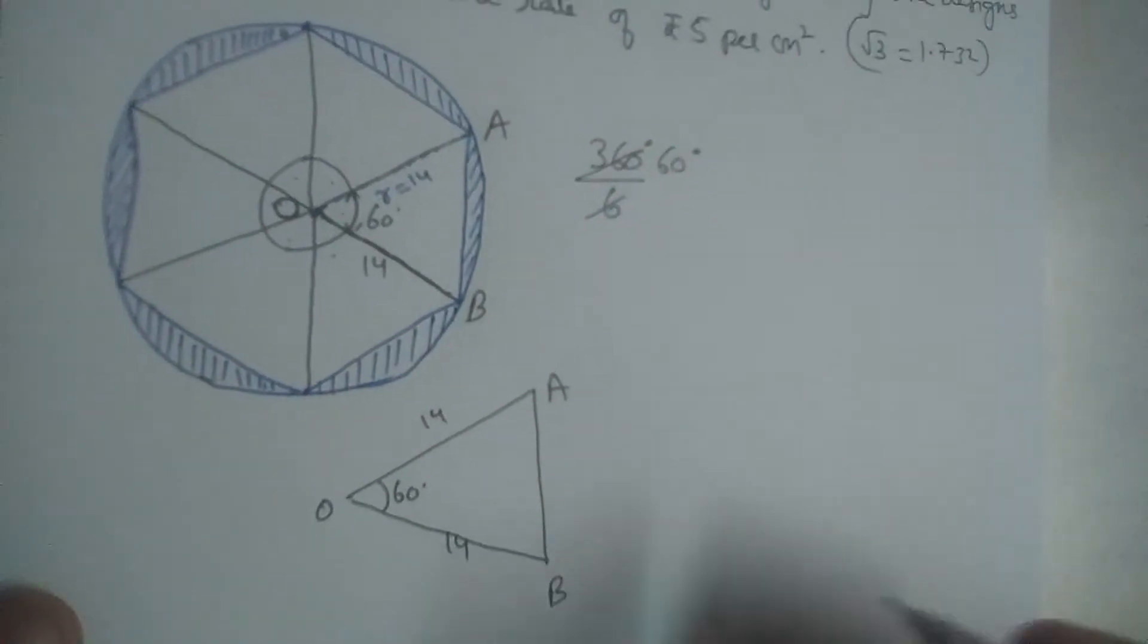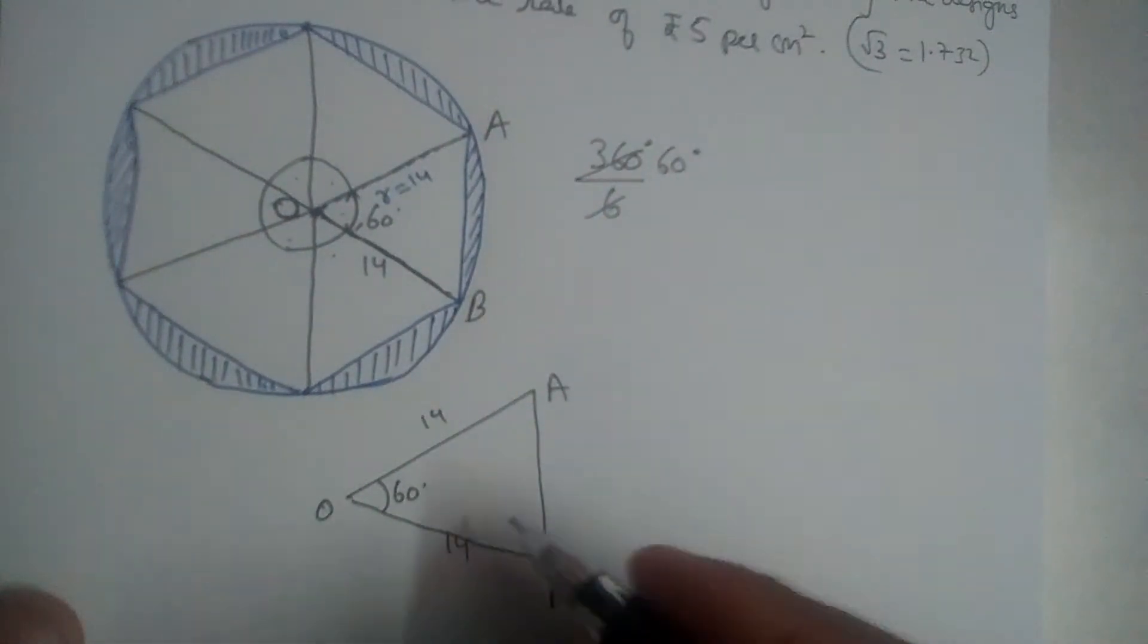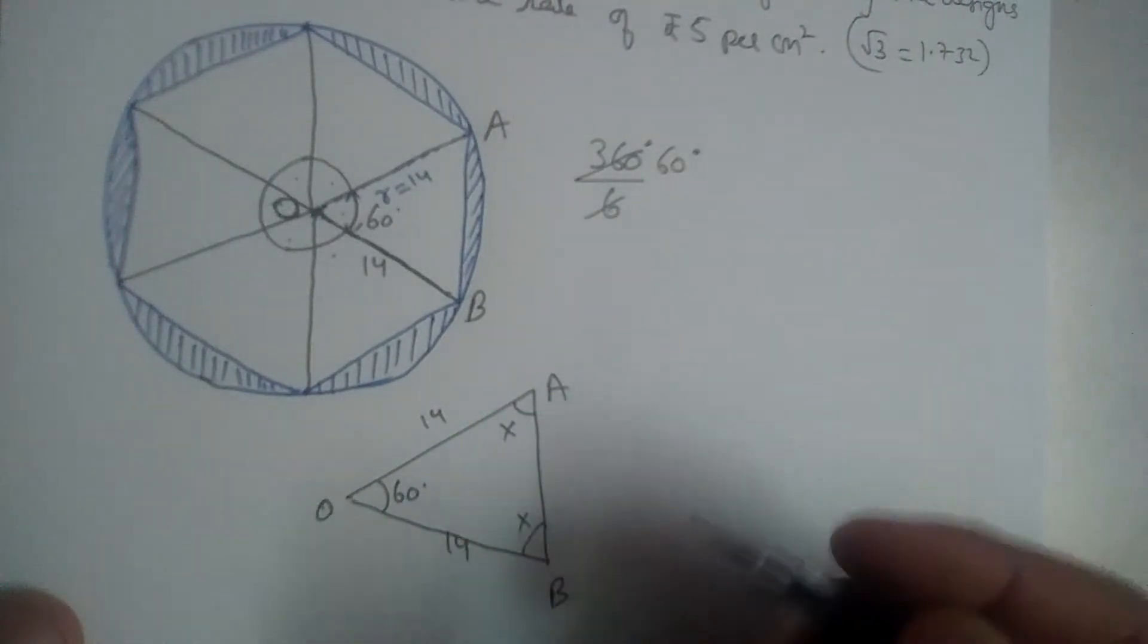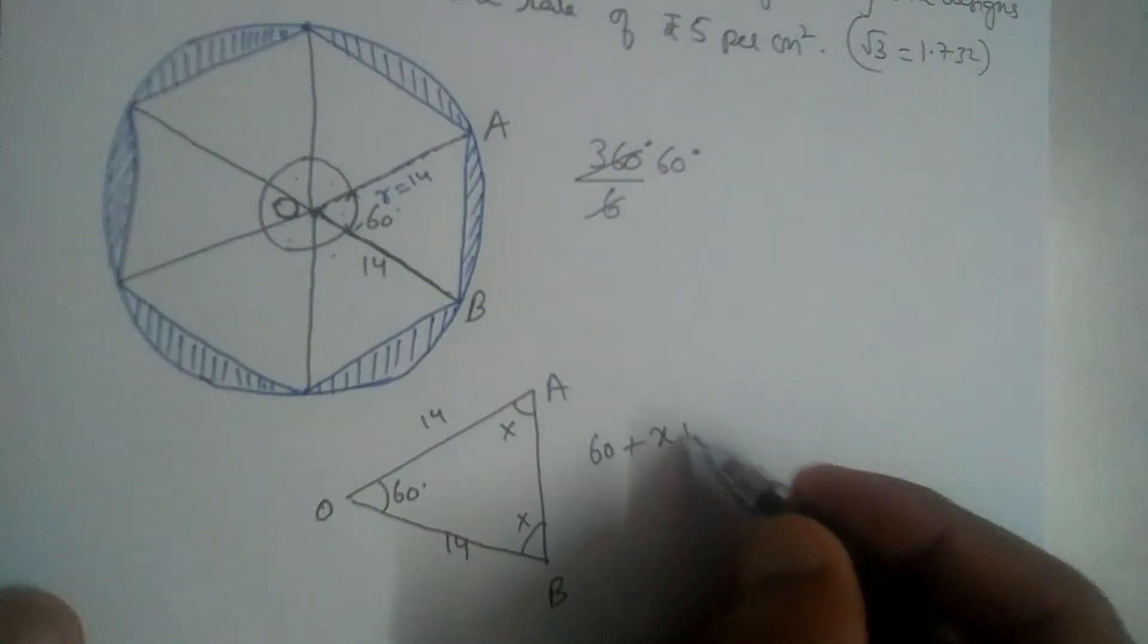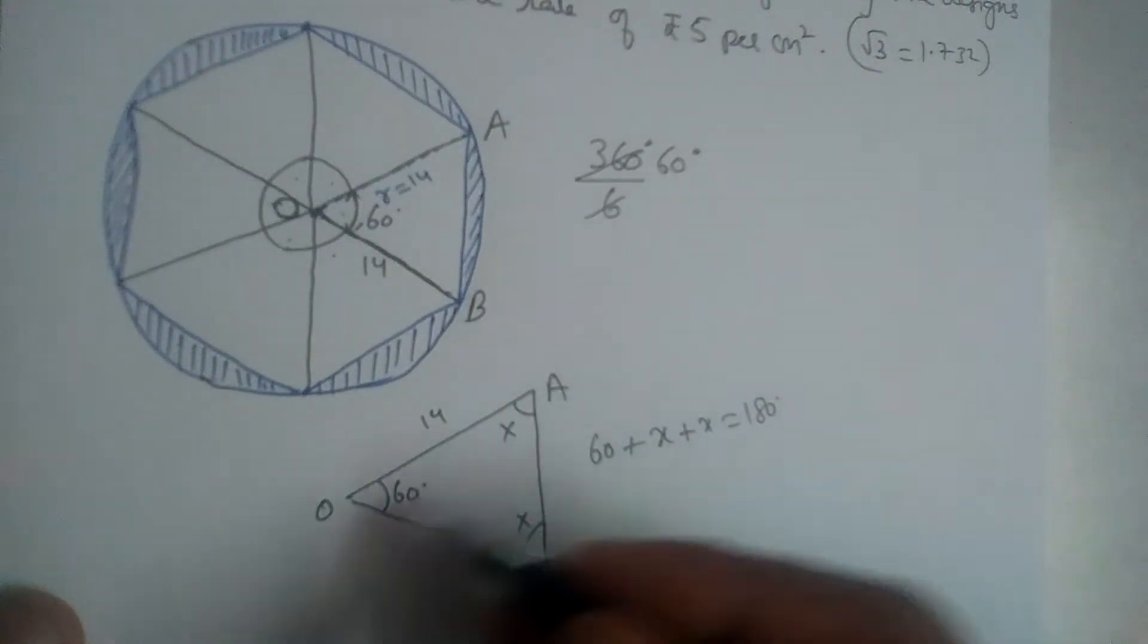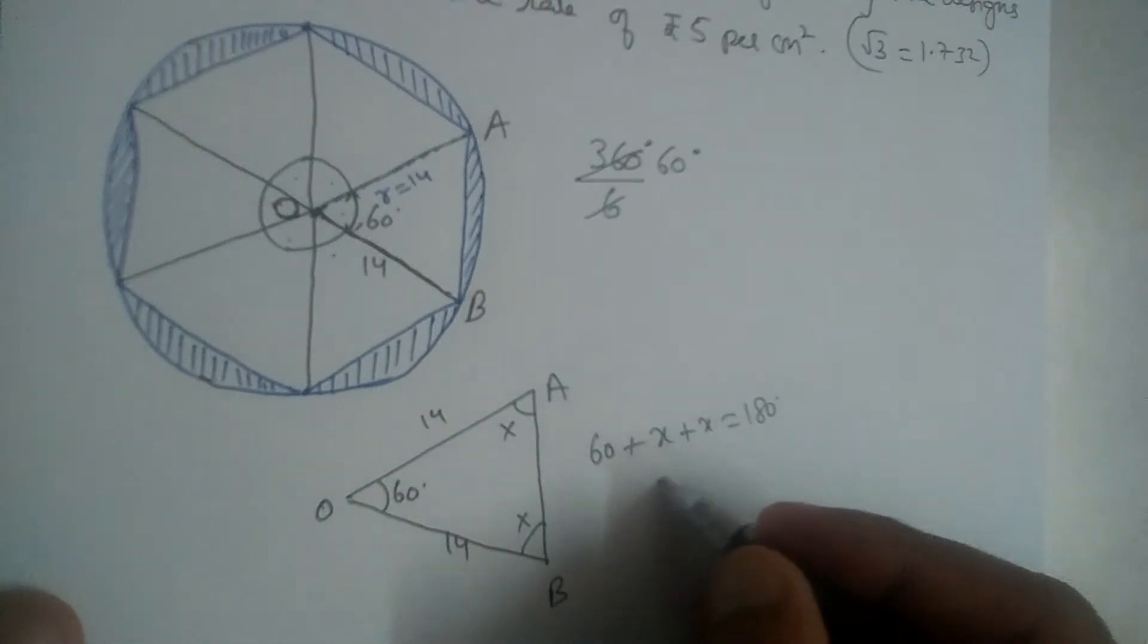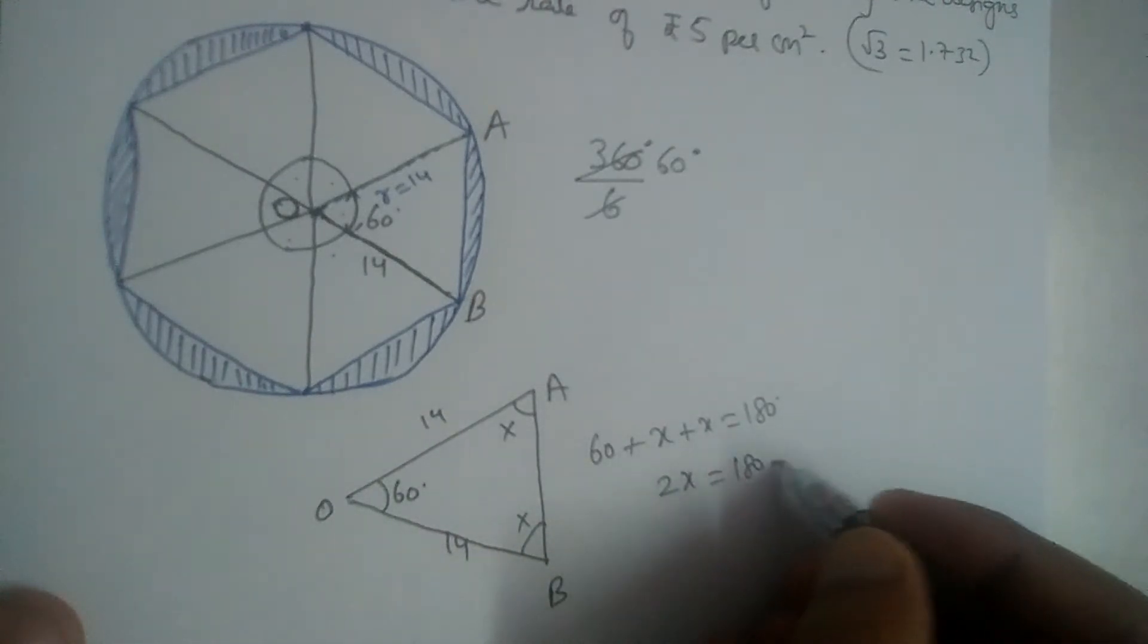Now, these two sides are equal, that means their opposite angles should also be equal. Let the opposite angles be x. Now if we add 60 plus x plus x, it should give us 180, because sum of three angles in a triangle should give us 180. So 2x is equal to 180 minus 60, which is 120.